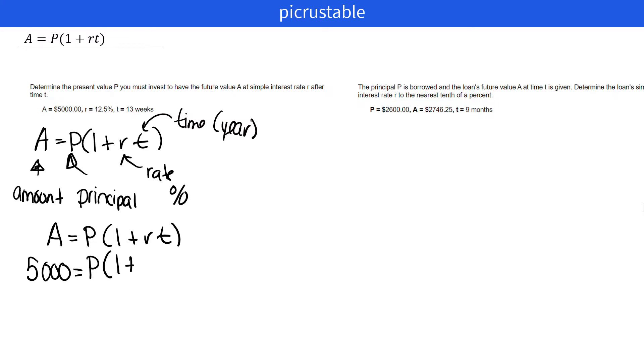Plus R, which is 12.5%. Now we have to change that to a decimal. So we're going to move two places to the left. So we're going to end up with 0.125. And we're going to multiply by T. Now we have 13 weeks. How many weeks are in a year? 52. So we're going to have 13 divided by 52.